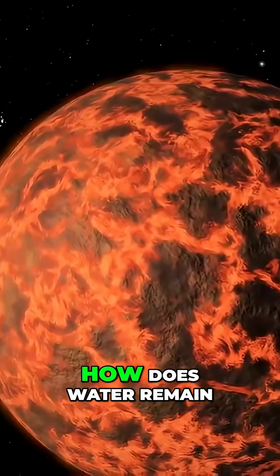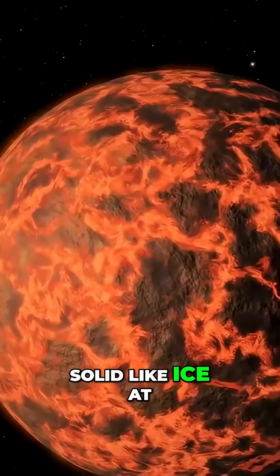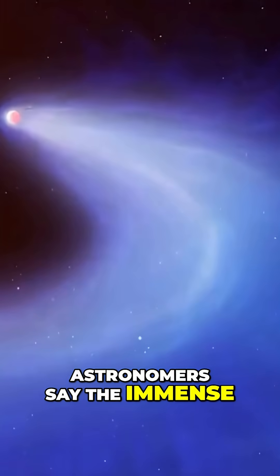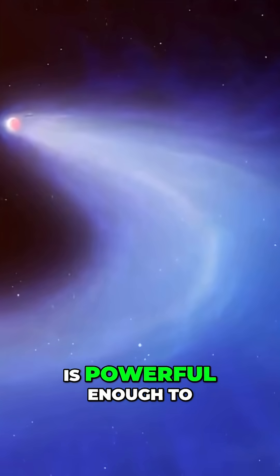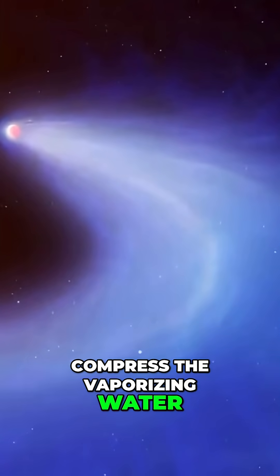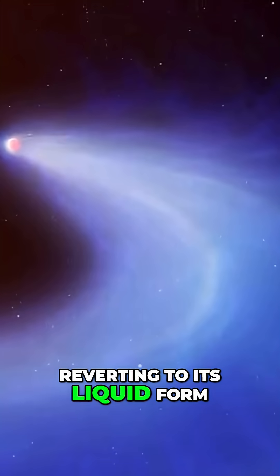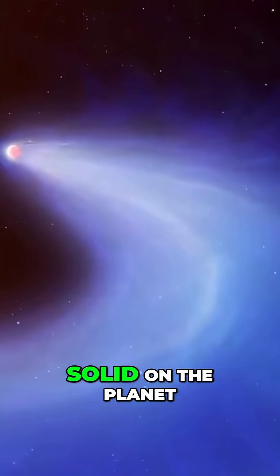So then one has to ask, how does water remain solid like ice at these high temperatures? Astronomers say the immense gravity of the planet is powerful enough to compress the vaporizing water in the atmosphere and prevent it from reverting to its liquid form, trapping it as a solid on the planet.